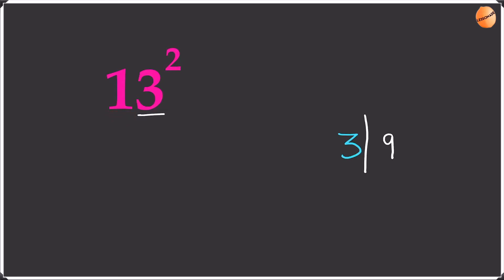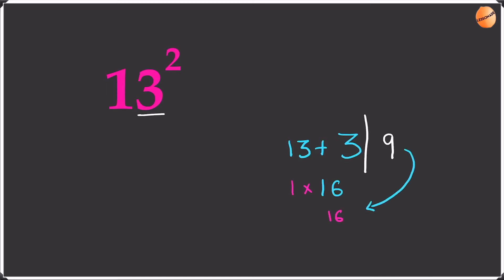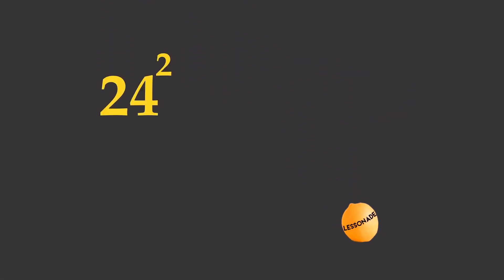After that, we're going to add this difference to the original number — so 3 plus 13 is 16. Then we times the 16 by the tens place, which is 1, so 1 times 16 is 16. We bring the 9 over and join them to get 169.